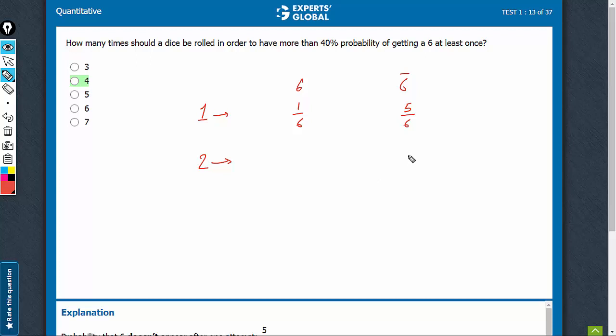A smarter way would be to find out the probability of not getting the 6 both times. That would be 5 by 6 into 5 by 6. That's 25 by 36. As long as this ratio is more than 0.6, this is going to be less than 0.4.